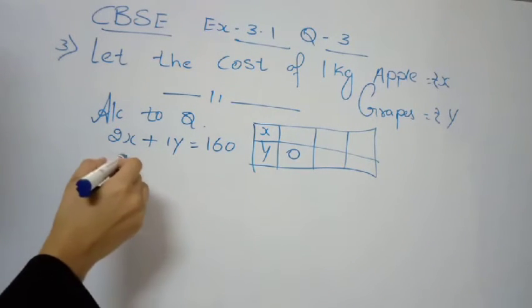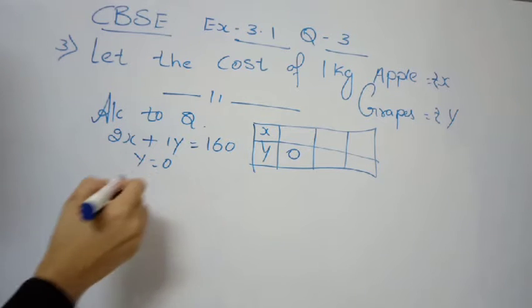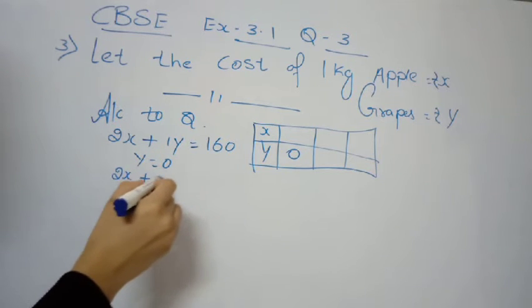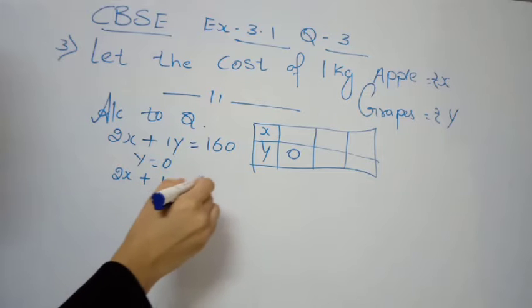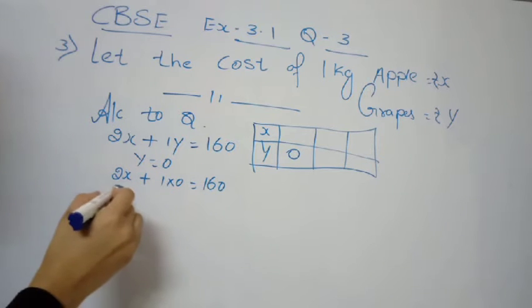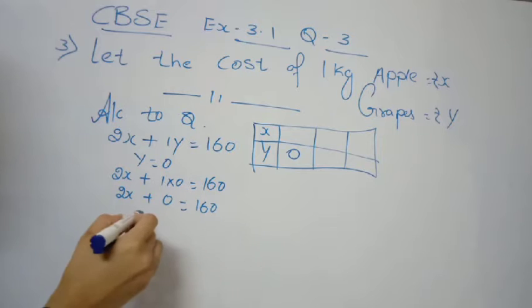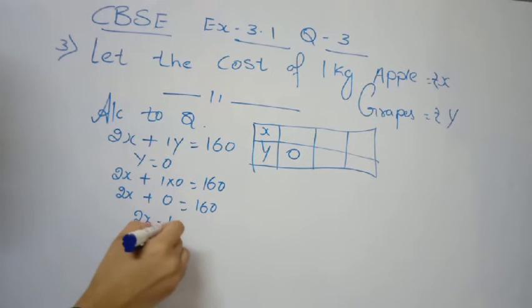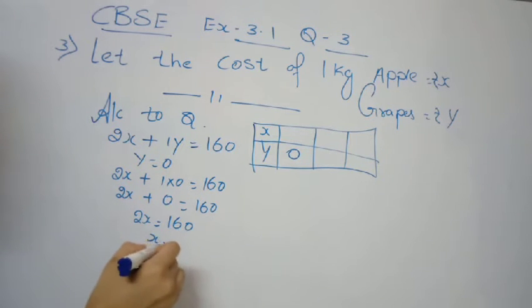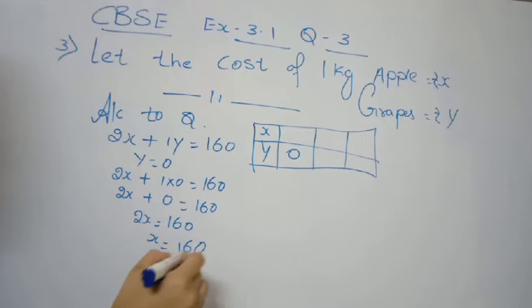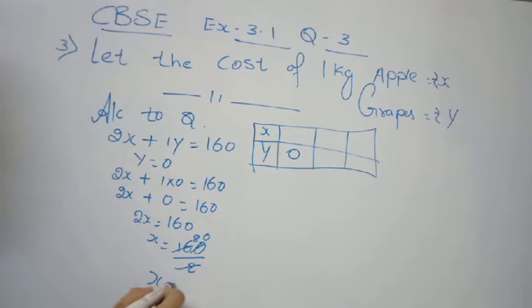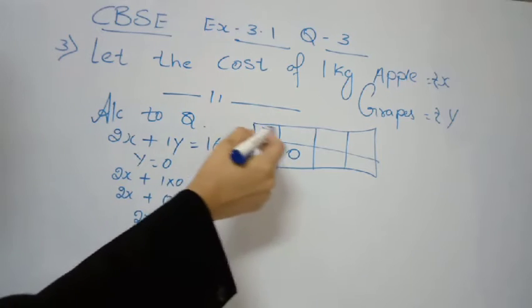To make the table for geometric representation, let y equal to 0. So 2x plus 1 into 0 equals 160. That gives 2x equals 160, so x equals 160 divided by 2, which equals 80. So when y is 0, x value is 80 rupees.